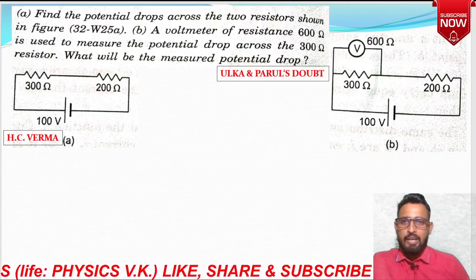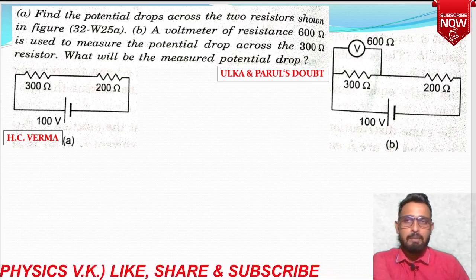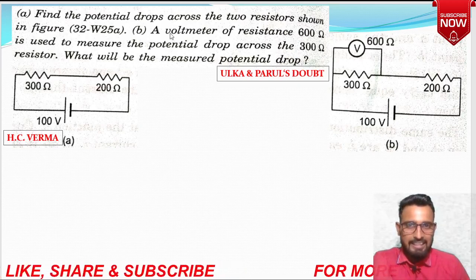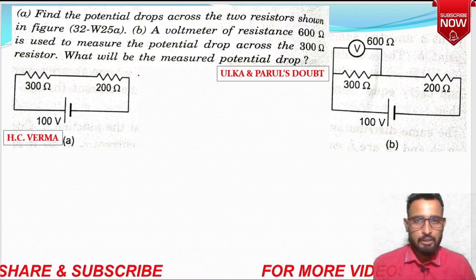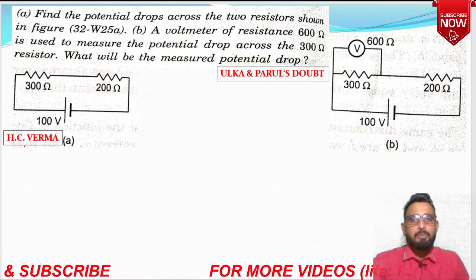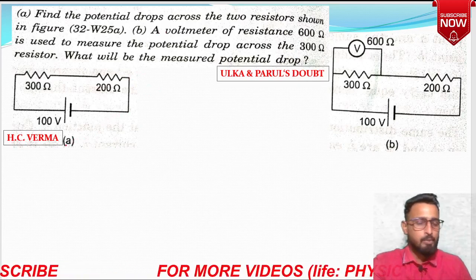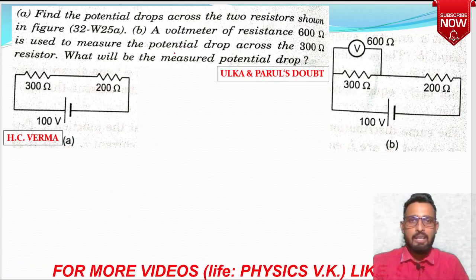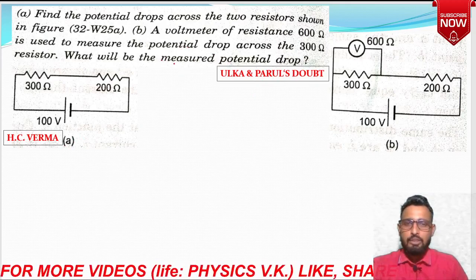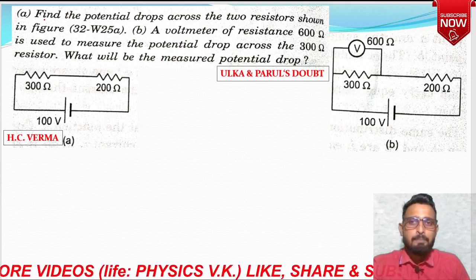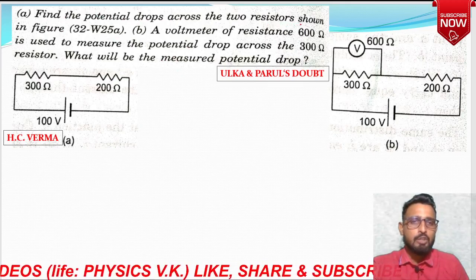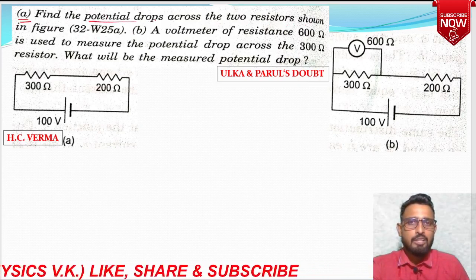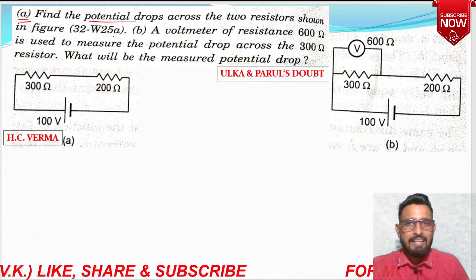So without wasting time, let's start our assignment — let's start the doubts corner. Here we have some questions I gathered in the past few days from various students, based on the electricity topics we have covered. This numerical is part of the HC Verma assignment that I shared with you. Two students, Alka and Parul, sent this in. Question says: find the potential drop across the two resistors shown in the figure. This is part one.